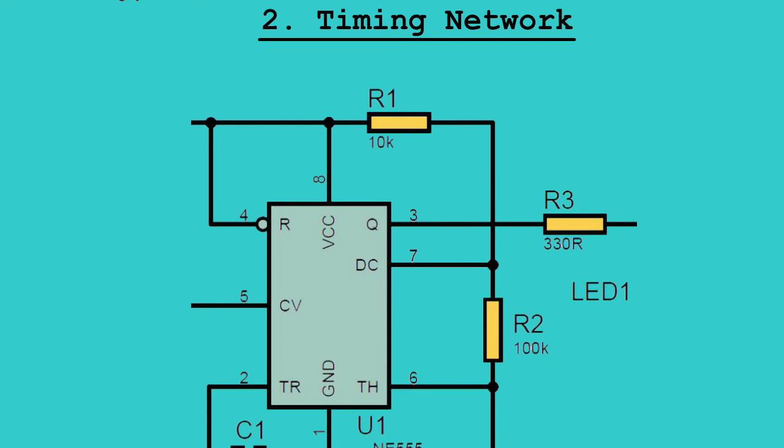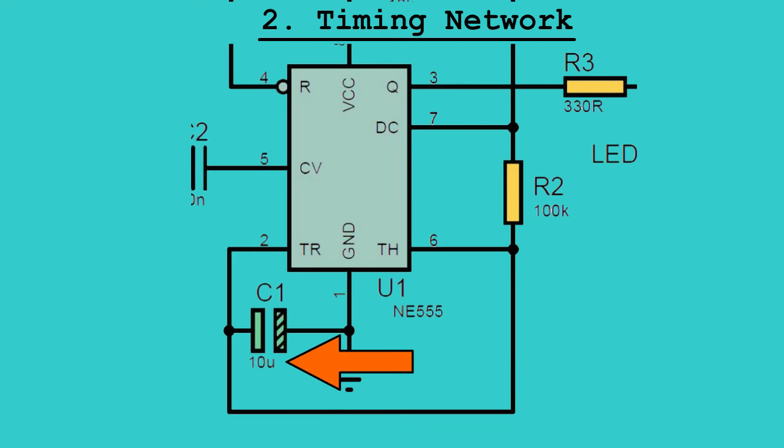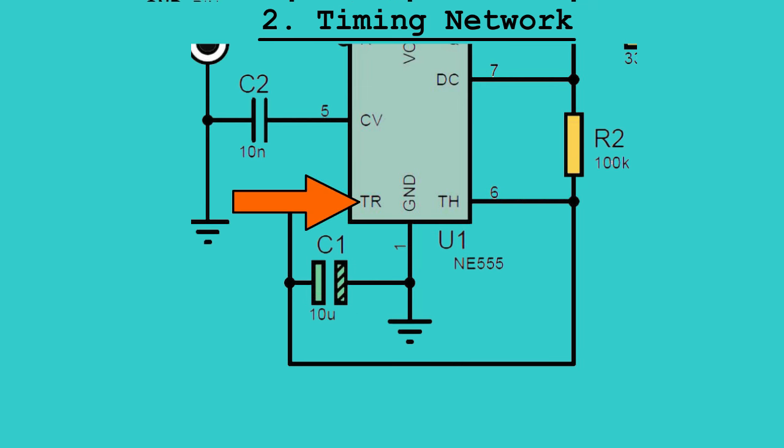Step 2: Timing Network. Connect a 10 kilo-ohm resistor between pin 7 (discharge) and pin 8 (VCC). Connect a 100 kilo-ohm resistor between pin 7 and pin 6 (threshold). Connect a 10 micro-farad capacitor between pin 6 and pin 1 (ground). Short pin 6 and pin 2 (trigger).